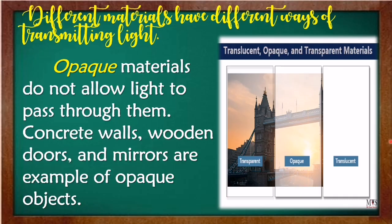Next, opaque materials do not allow light to pass through them. Wooden materials and mirrors are examples of opaque objects.